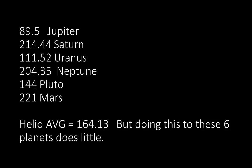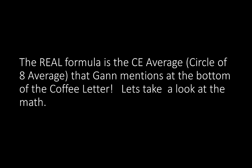But doing this to these six planets does little — it doesn't work too well. You want a better tool. The real formula is the circle of eight average, which Gann mentions at the bottom of the coffee letter. Let's take a look at the math.